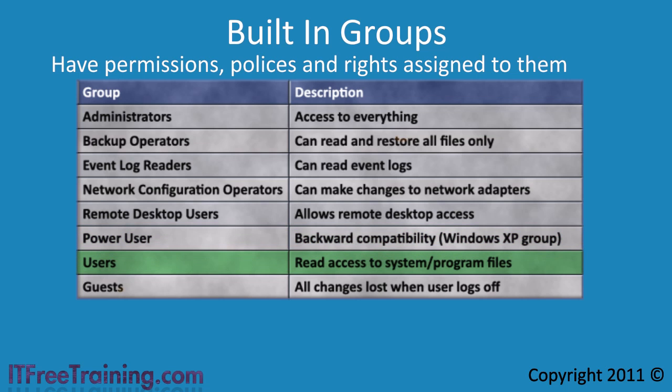The next group is the users group, which is recommended for the average user. When in this group, the user can make changes to system settings that only affect them, and can only read system and program files. Users cannot change settings that affect the entire computer, and it is recommended that the general user be put into this group. The last group is the guest group, usually only used on kiosk-style computers. Users in this group have limited rights which basically allow them to use resources and run programs but not make changes.